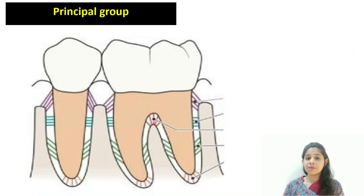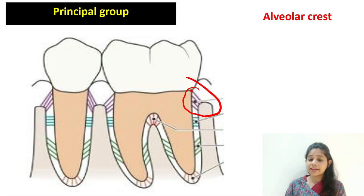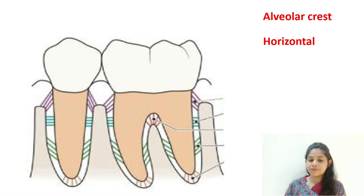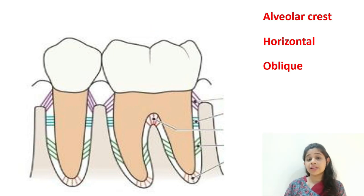The principal fiber group is the major component in the PDL space. The first subgroup is the alveolar crest group: it runs in an apical fashion, starting from the cementum just beneath the junctional epithelium and inserting into the alveolar crest — hence the name. They facilitate extrusive and lateral movement of the teeth. The second group is the horizontal fibers, which are present perpendicular to the long axis of the teeth, usually in the apical two-thirds of the root. The third group is the oblique fibers, which are the most abundant — approximately 80% of the fiber group — and are present in an oblique, coronal direction.